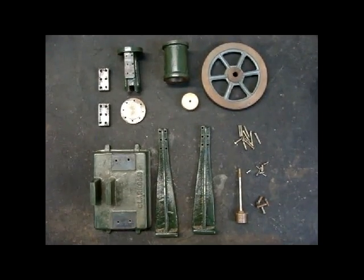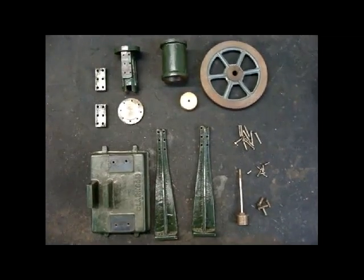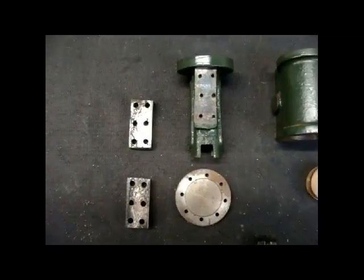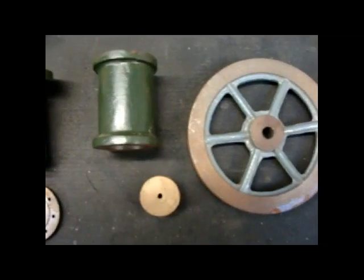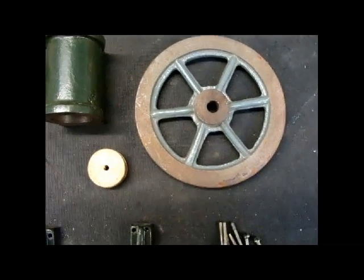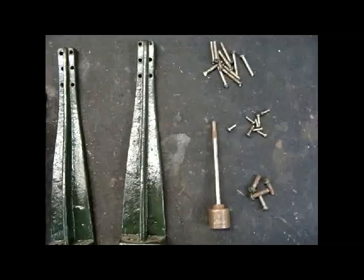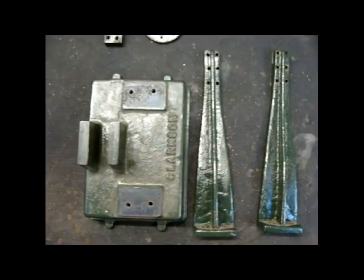Here we have the Clarkson stationary engine broken down into its component parts, ready for restoration. Clockwise from top left, we've got the two spacer pieces, the trunk guide, the top cylinder cover, the cylinder, the piston, the flywheel, sundry fixings, piston rod, the crosshead, the two standards, and the base plate.